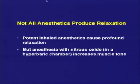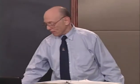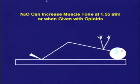Relaxation is irrelevant. The potent inhaled anesthetics do cause profound relaxation. But nitrous oxide does not. Go into a pressure chamber and give a volunteer one-and-a-half atmospheres of nitrous oxide, and the head and heels are on the table but nothing in between — the volunteer is rigid as a board. To get an endotracheal tube in, you have to give a muscle relaxant, or you can pry the jaws apart — but that's not a very smooth approach.